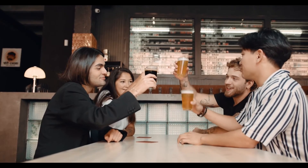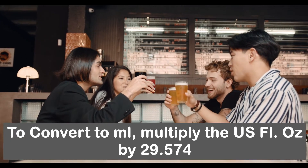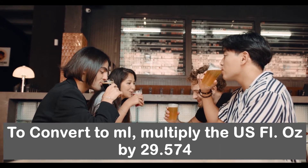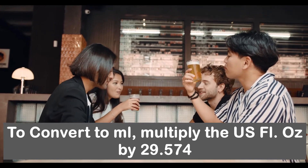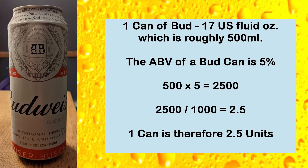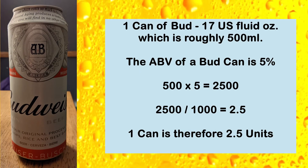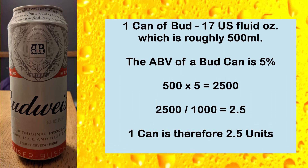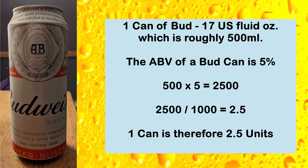Why not try the formula on the beer you're drinking now? If you're in the USA, you can find out how many millilitres your bottle, pint or can is by multiplying the ounces by 29.574. For a more obvious American example: a 17-ounce can of Budweiser is about 500 millilitres. Budweiser is generally 5%, giving us 2500, and dividing by 1000 means that can of Bud is 2.5 units.